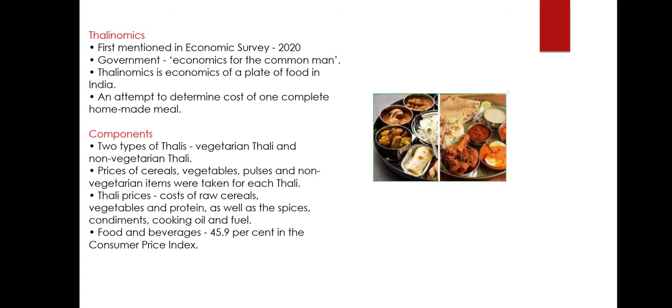Usually, two types of thalis are considered for analysis: vegetarian and non-vegetarian. Quantities for cereals, vegetables, pulses, and non-vegetarian items are taken for each thali, assuming at least two full meals per day. Thali prices include the cost of cereals, vegetables, proteins, spices, condiments, cooking oil, and fuel needed to prepare the meal — so the price arrived at in thalinomics is inclusive of all items needed.